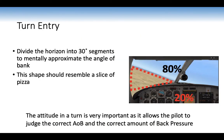For turn entry, divide the turn into thirds to mentally approximate the angle of bank — the shape should resemble a slice of pizza, with an 80% outside, 20% inside ratio on the windscreen. The attitude in the turn is very important: it allows the pilot to judge the correct angle of bank and apply the correct amount of back pressure. If the nose is low, you'll descend; if pitch increases, you'll climb.